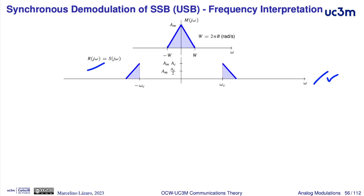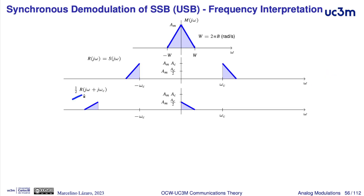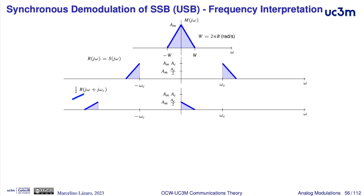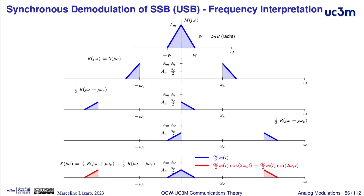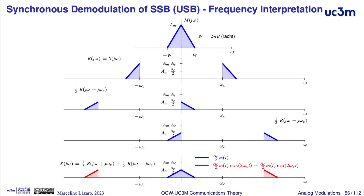If this is the received signal, the product with a cosine will produce two replicas of this frequency response, shifted: one shifted by minus ω_c with half the previous amplitude, and the other shifted by plus ω_c also with half the previous amplitude. After the product with the cosine, we have the addition of these two replicas. In baseband, we have an unscaled version of the frequency response of the modulating signal, and the low pass filter removes the two bandpass components. Note that the two components that are removed are in fact another single sideband modulated signal, in this case with twice the carrier frequency.